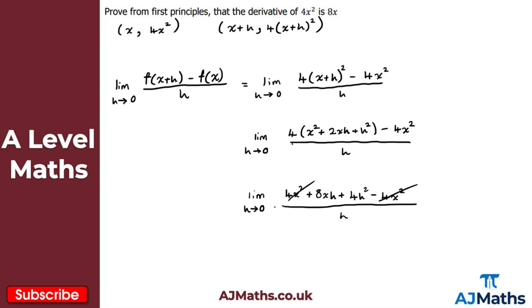Dividing top and bottom by h, the 4x² terms have already cancelled, and we get the limit as h tends to zero of 8x plus 4h. As h tends to zero, 4 times essentially zero is zero, so we're left with simply 8x, which is what we were required to prove.